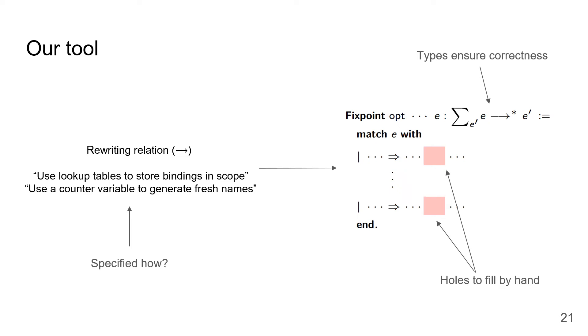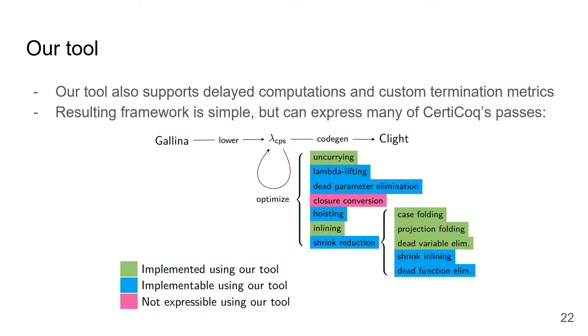So, going back to this picture from earlier, we now have our answer to this question of how to specify the invariants held by data structures that compiler writers like to use. And our answer is that a lot of these data structures maintain invariants that relate their values to pairs consisting of one whole context and a subterm in focus. In addition to this notion of helper data structures, our tool also supports a restricted kind of delayed computation and the ability to specify custom termination metrics. The resulting framework is simple but capable of expressing many of CertiCoq's backend passes. Here in green, I've highlighted the passes that we've implemented using our tool. In blue, the passes that we believe could be implemented. And in red, the one pass, closure conversion, which we believe is not expressible, mainly because it's rather tricky to figure out how to express closure conversion as a rewrite rule.